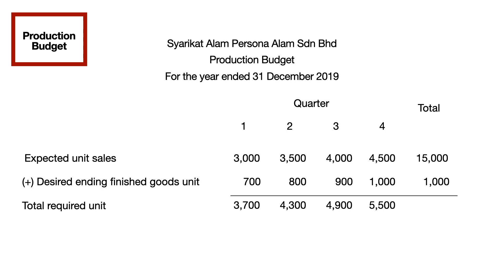To get the total of required units to be produced, you need to add the expected unit sales with the desired ending goods for every quarter. To get the total of required units for that year, you only need to total both 15,000 and 1,000 units.